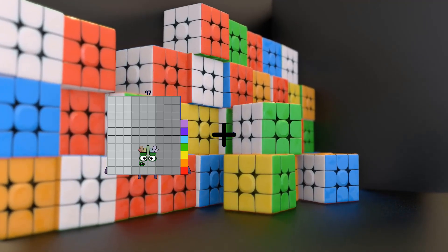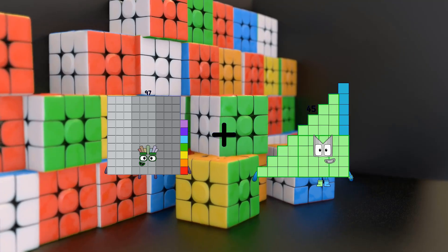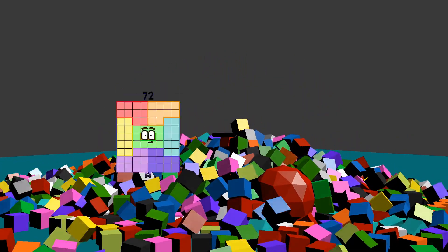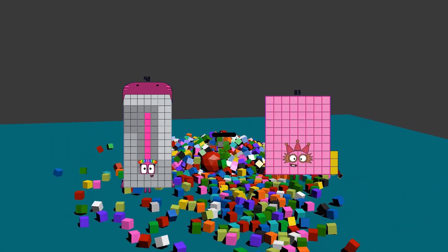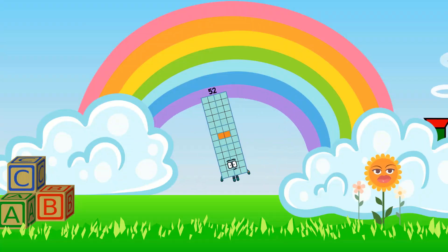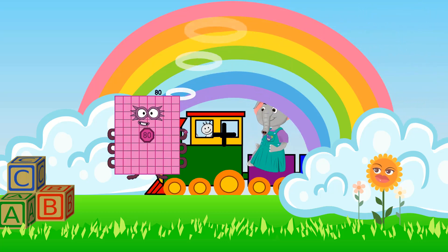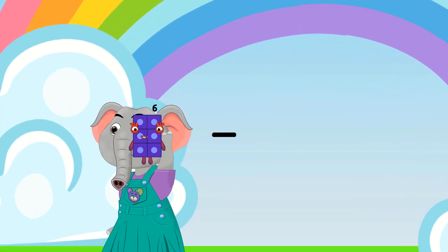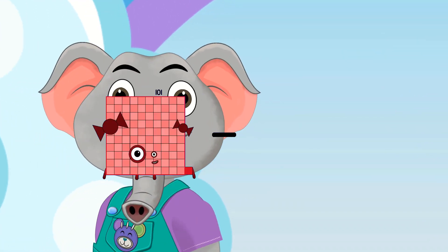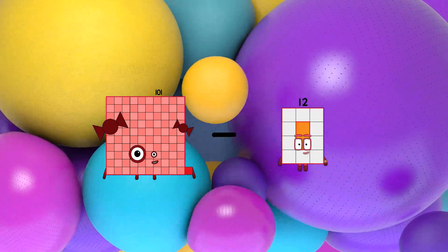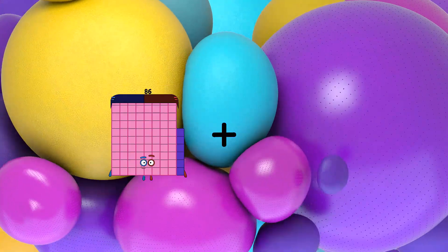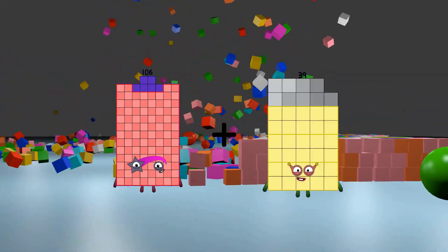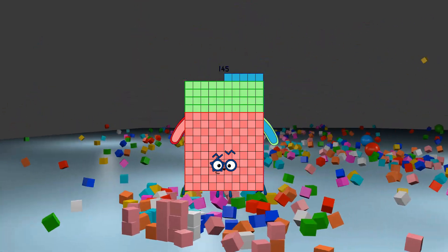97 plus 82 equals 179. 98 minus 46 equals 52. 80 plus 8 equals 88. 101 minus 12 equals 89. 107 plus 31 equals 145.